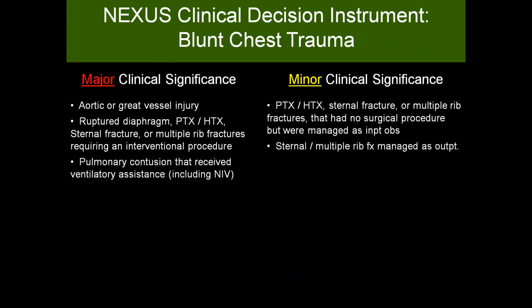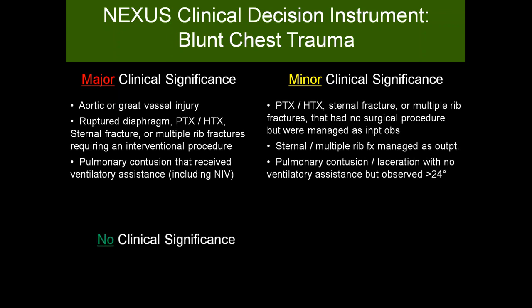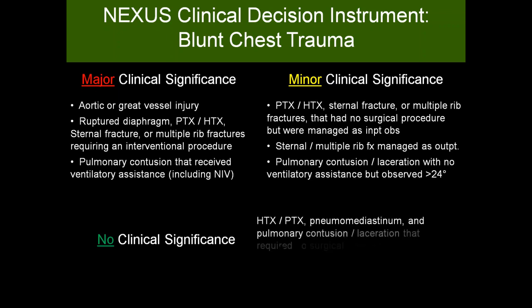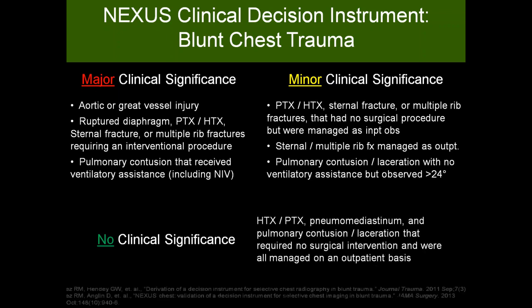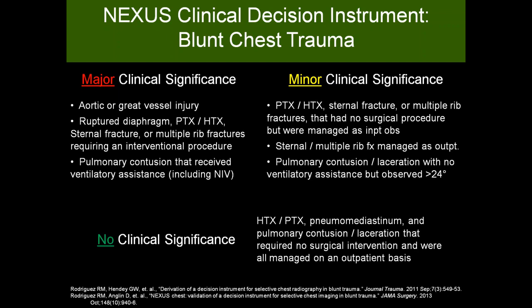Sternal or multiple rib fractures managed as an outpatient, and pulmonary contusion or laceration requiring no ventilatory assistance but observed more than 24 hours, are classified as minor clinical significance. Findings of no clinical significance include hemothorax, pneumothorax, pneumomediastinum, and pulmonary contusion or laceration managed entirely on an outpatient basis. Make sure you understand what the rule is saying — it's not saying they don't have injuries; it's saying those injuries are not clinically significant.